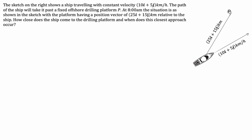At 8am, the situation is as shown in the sketch, with the platform having a position vector of 25i plus 15j kilometers relative to the ship. How close does the ship come to the drilling platform and when does this closest approach occur?